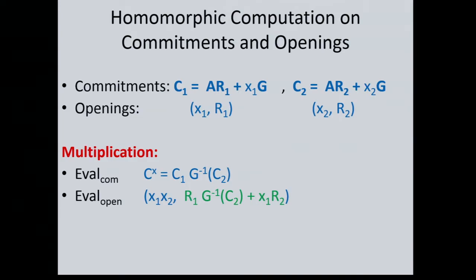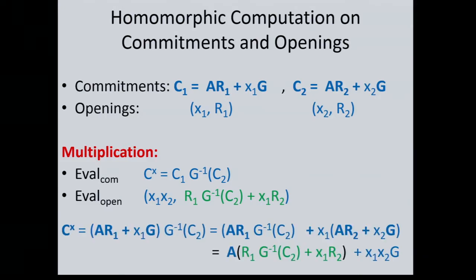Multiplication is a little harder. To create a homomorphic product, you compute c1 times G-inverse of c2. The new randomness is more complex. What's happening: open c1 as AR1 + x1*G, multiply by G-inverse(c2) — which is short — grouping R1 and G-inverse(c2) together. Then x1*G * G-inverse(c2) gives x1*c2. Writing c2 as AR2 + x2*G, grouping x1*R2, all the short values together yield the commitment to x1*x2. We're just tracking what happens to randomness during GSW operations.